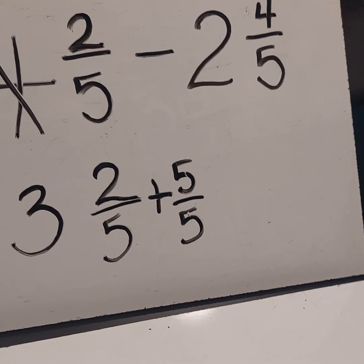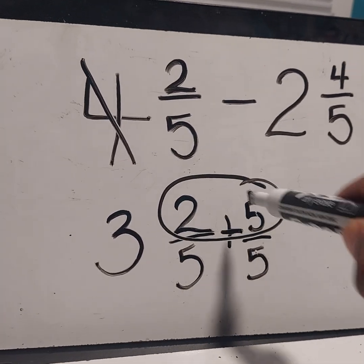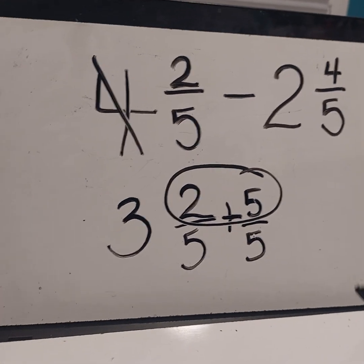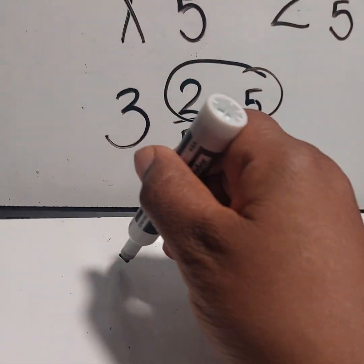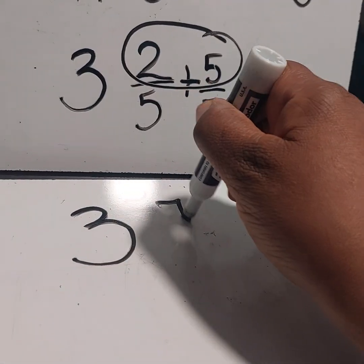So what I'm going to do now is to add my numerators. So I'm going to rewrite this. Let's write it right here. I'm going to put 3 and 7 fifths.